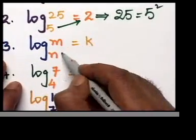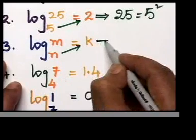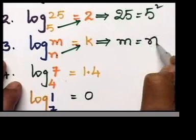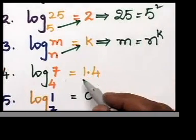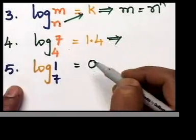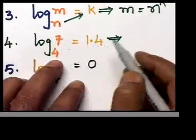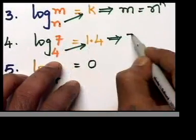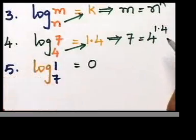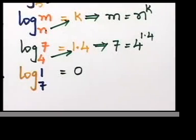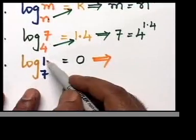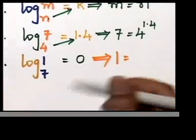The next one: logₙ m = k. The line goes there - we can say m = n^k. The next one: log₄ 7 = 1.4. I just checked with my calculator, this is right. 7 = 4^1.4. Sorry, we're off the screen there. The last and final, the fifth question: 1 = 1.